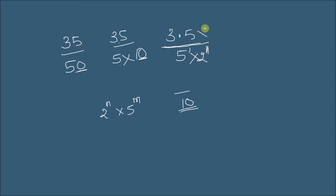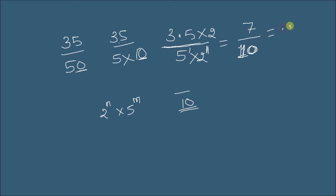We multiply by 2 in the numerator as well. So this becomes 3.5 into 2, which gives 7, divided by 10 — because 5 times 2 equals 10. So 7 divided by 10 gives us 0.7. This is the decimal expansion of 35/50 without using the long division process.